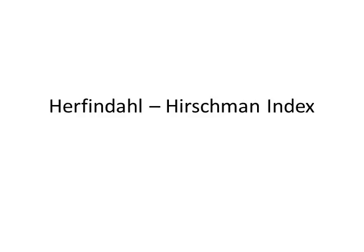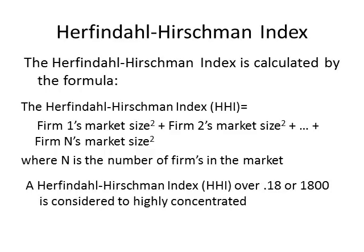Another way to measure concentration in a market is the Herfindahl-Hirschman Index, or HHI. The Herfindahl-Hirschman Index is calculated by the formula: HHI equals the sum of each firm's market share squared, from firm 1 through firm n, where n is the number of firms in the market. The market size is given either as a decimal fraction or as a percentage.